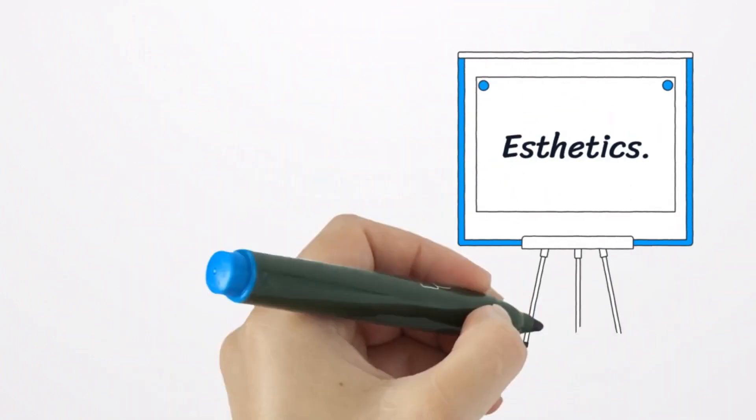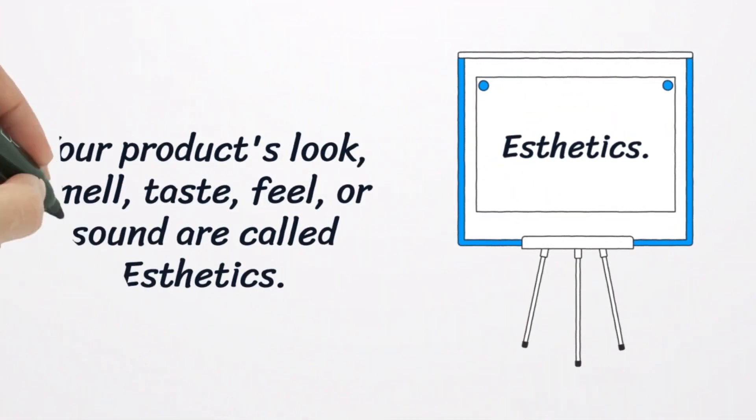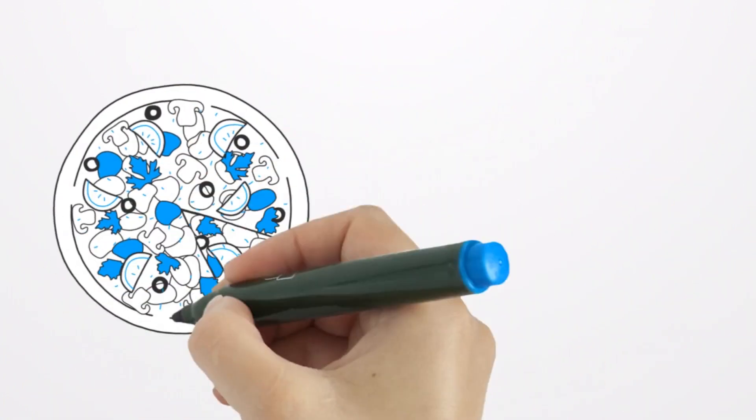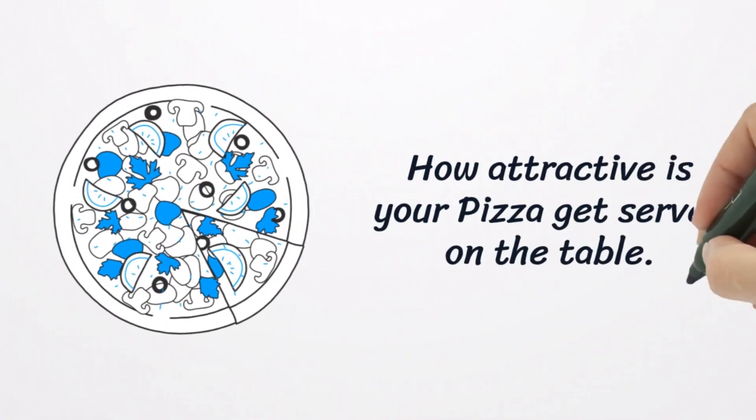Aesthetics is the seventh dimension. More and more products and services routinely provide the first six dimensions to a high standard. So this very subjective dimension is becoming increasingly important. Your product's look, smell, taste, feel, or sound might be the only quality that differentiates it from another. Example: how attractively a restaurant owner can serve pizza to their customers.